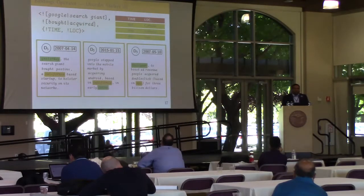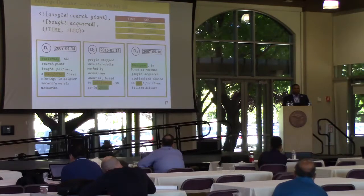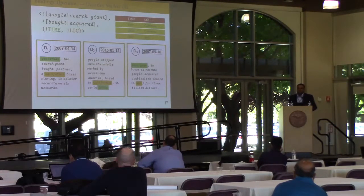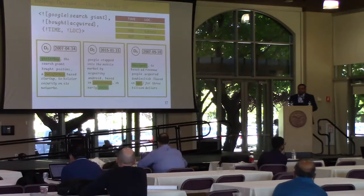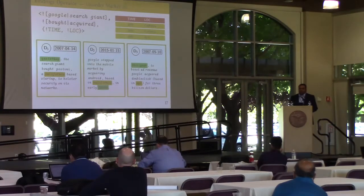With the binding operator, mentions must appear in a specific sequence, which is good for asymmetric relationships like Google acquiring a company. But for symmetric relationships, such as marriage—where order is not important—we use the unordered marker to decorate the binding operator. In this example, unordered markers are placed around time and location annotations, so their mentions can be interchangeable within the matched sentence. In the first and last documents, time is mentioned before location; in the second, it is vice versa.